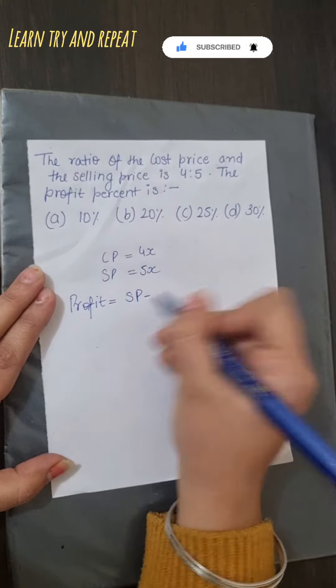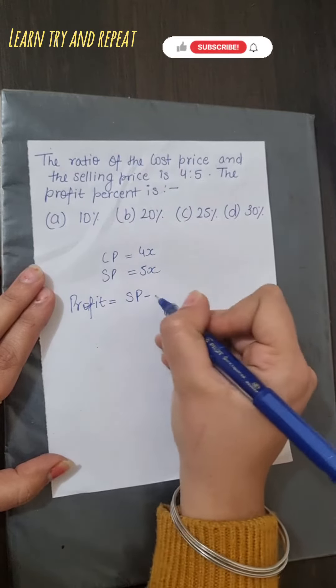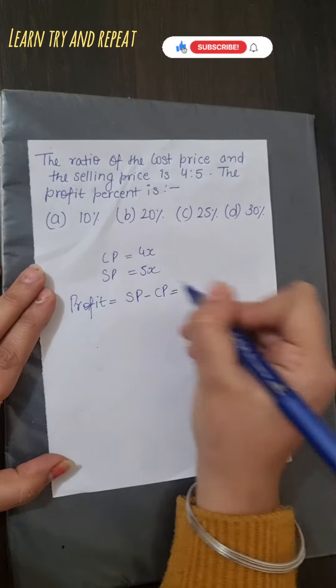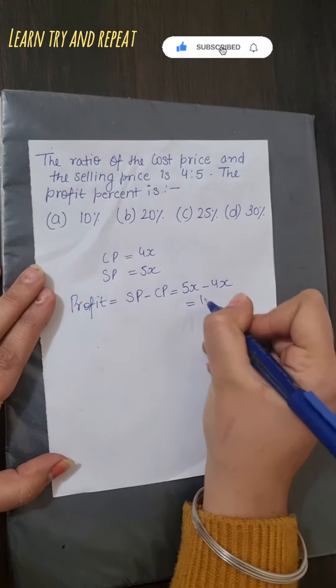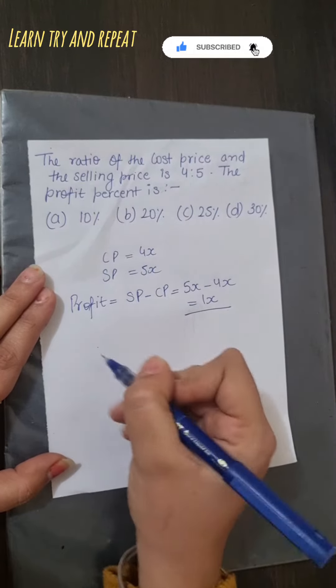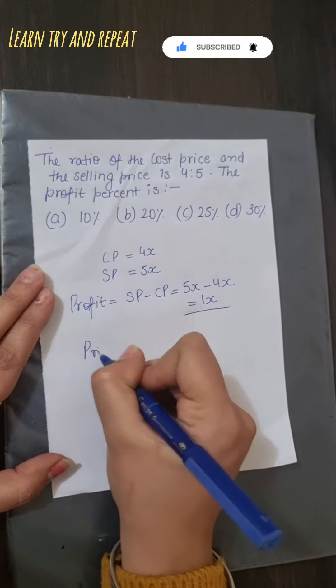When we have selling price and subtract cost price from it, we will get profit. So this is 5x minus 4x and you will get 1x. Now you have to apply the formula.